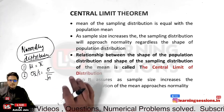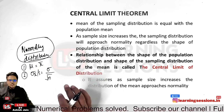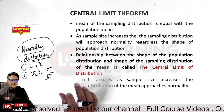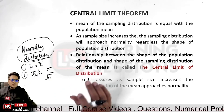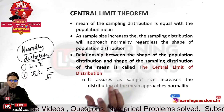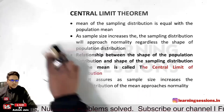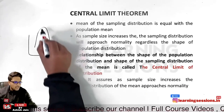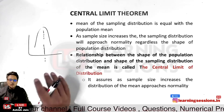Now moving to the central limit theorem — it describes the relationship between the shape of the population distribution and the shape of the sampling distribution of the mean. It is called the central limit theorem, and it assures that as the sample size increases, the sampling distribution will approach normality regardless of the shape of the population distribution. A normal population means the curve is symmetric around the mean.